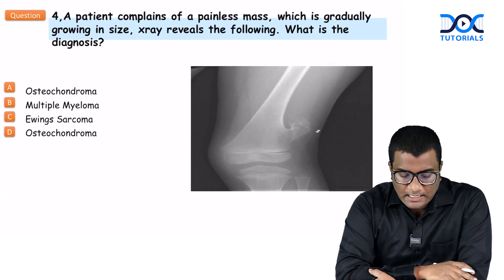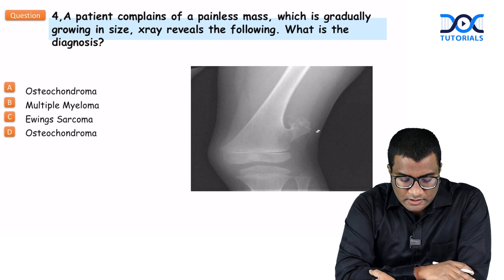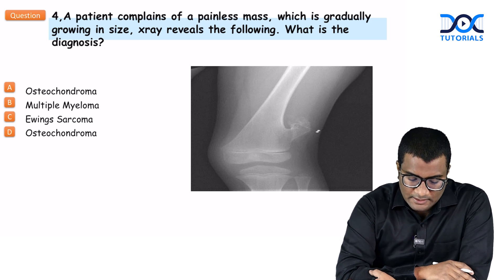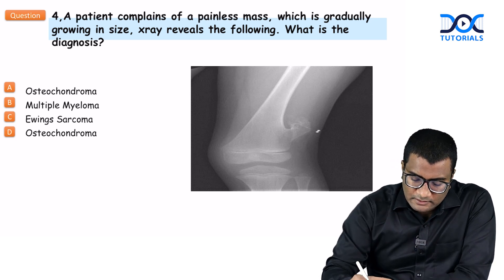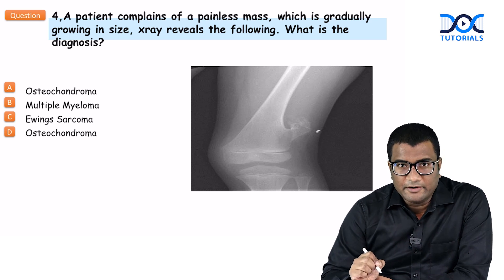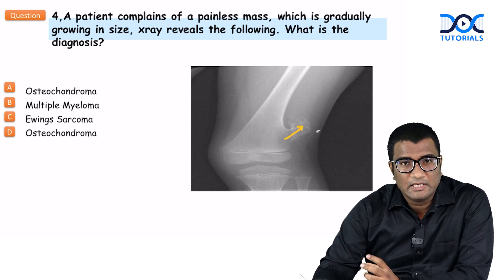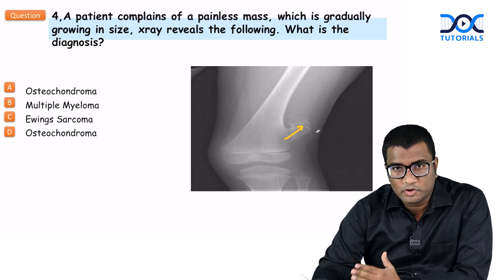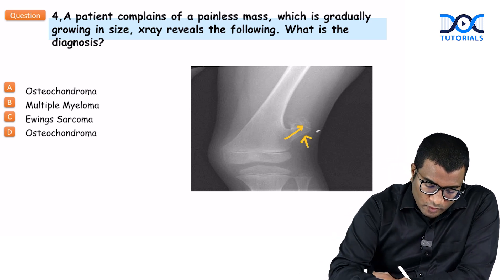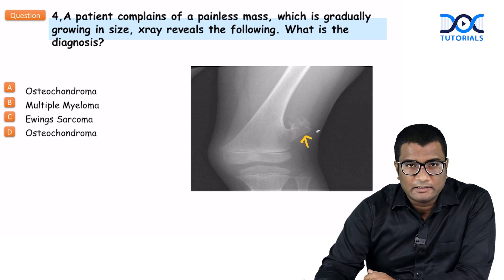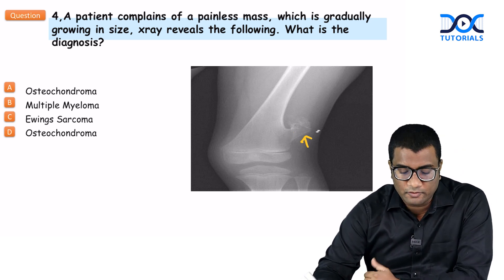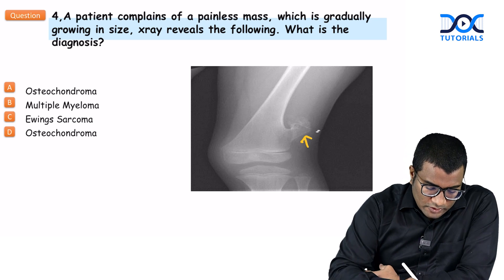Next: a patient complains of a painless mass gradually growing in size, and the X-ray reveals a bony lesion. The options are osteochondroma, multiple myeloma, Ewing's sarcoma, or osteochondroma. Looking at the knee radiograph, you see a bony lesion that is continuous with the cortex and medulla of the bone, growing away from the growth plate and away from the joint. This structure growing away from the joint is osteochondroma.